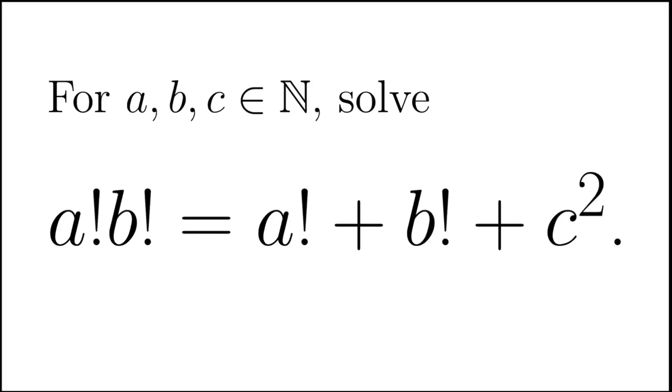Let's take a look at this problem. For natural numbers a, b, and c, solve the equation a factorial times b factorial equals a factorial plus b factorial plus c squared.